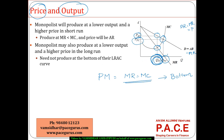Even if the monopoly produces where MR is less than MC, or at MR equal to MC, the price would be much higher and the average revenue is the price. So, a monopolist produces a lower output at a higher price. It need not compare itself with the average variable cost or the long run average cost — it need not produce at the bottom of the long run average cost. It can produce slightly above or below it. Pricing can be done at a much higher level in case of a monopoly.